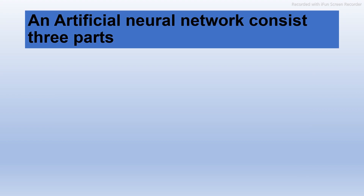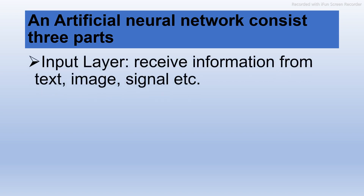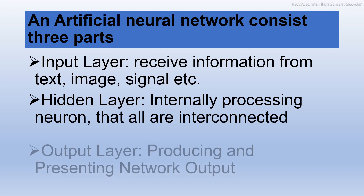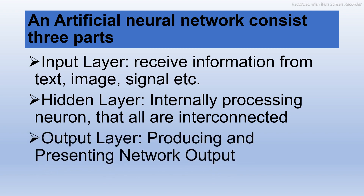An artificial neural network consists of three main parts. First is the input layer, which only receives information from text, images, signals, etc. Second is the hidden layer, which internally processes the interconnected neurons. Third is the output layer, which produces and presents the network output.